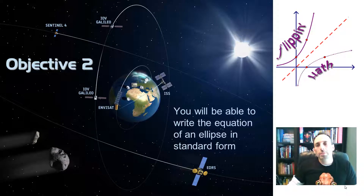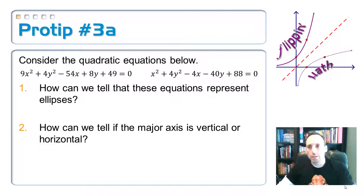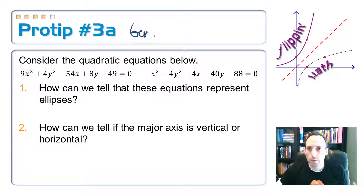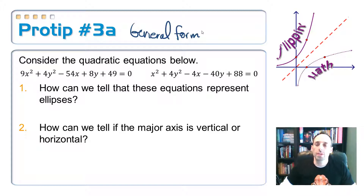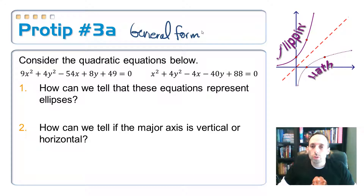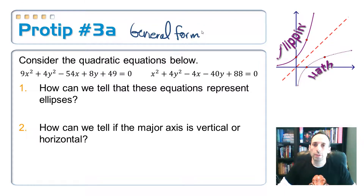Let's look at some actual equations of ellipses written in general form. On your flowchart, they're written in standard form. A couple of questions: if I just have my equations written in general form, how can I look at them and tell that these are ellipses? And second, can I also tell if the major axis is vertical or horizontal? We can answer both questions just by looking, without doing any algebra.